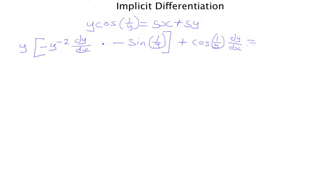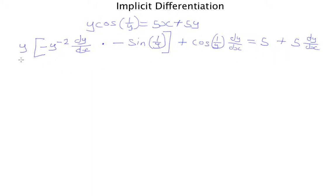Now I do the same for the right-hand side. The derivative of 5x is 5, and the derivative of 5y is 5·dy/dx. So I've expanded the derivatives using the product rule and chain rule on the left, and differentiated both terms on the right. All that's left now is to multiply out the brackets and simplify.